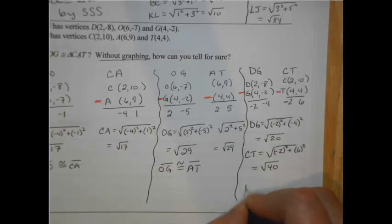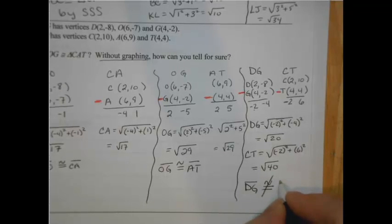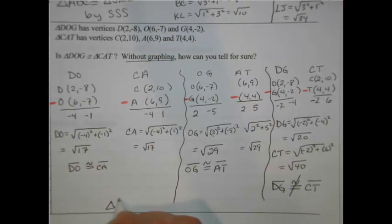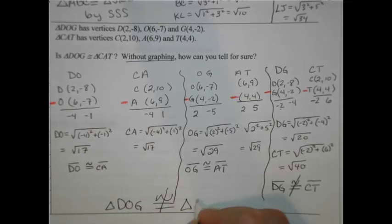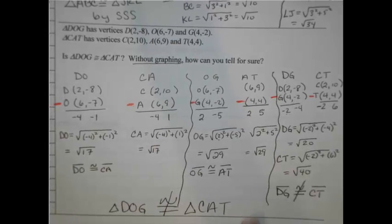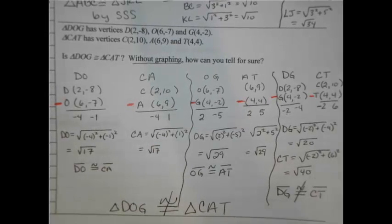How do we write that? We would write it this way. We would say DG is not congruent - that's this symbol, slash through that like a ninja - it's not congruent to CT. So we have two side matches and one that doesn't match. So are these congruent? We would say no. So triangle DOG is not congruent to triangle CAT. And without graphing, we've proved it. It's a lot to do. You really need to stay organized so that people can follow your thinking.